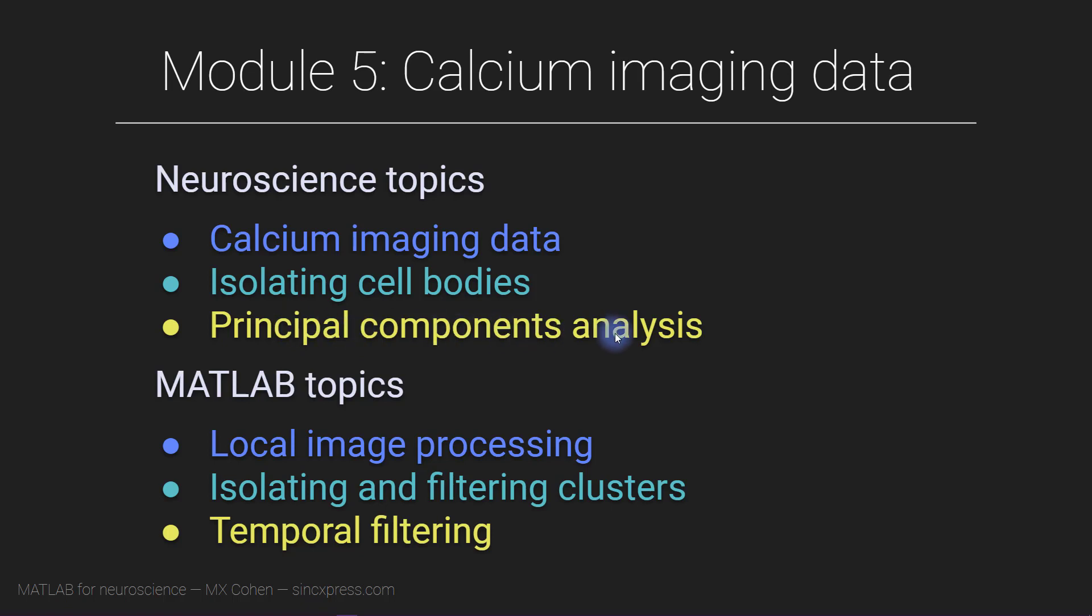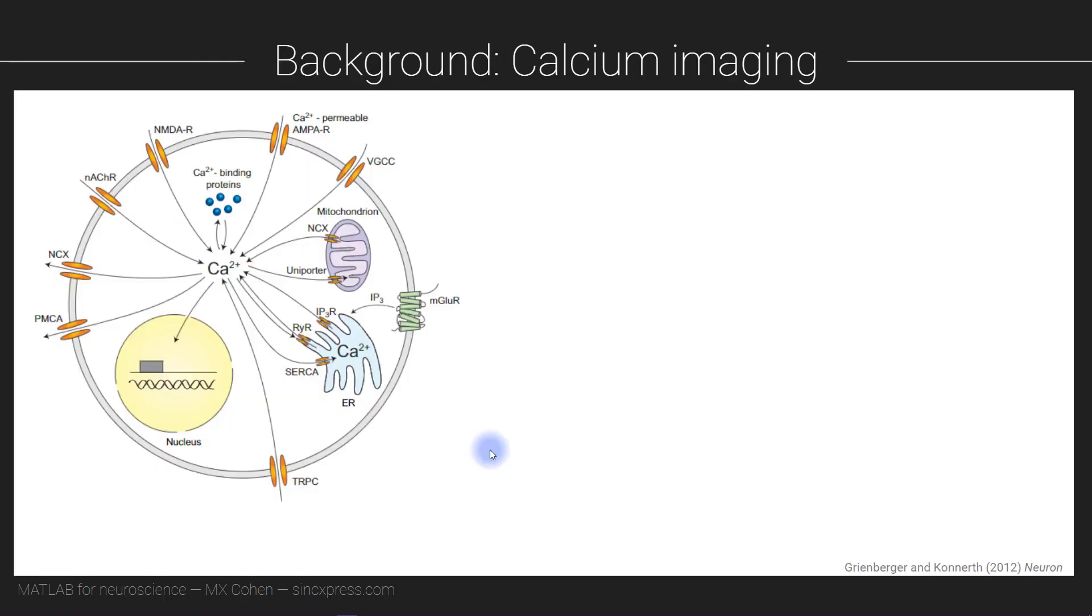This module relies on the Image Processing Toolbox in MATLAB. Neurons are pretty complicated little biological machines. There are myriad chemical and physical dynamics happening inside of each cell, and it turns out that calcium is involved in a lot of these intracellular processes. That means that when a neuron is active, a lot of calcium is being transported around the cell.